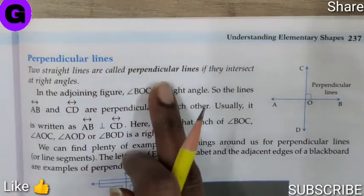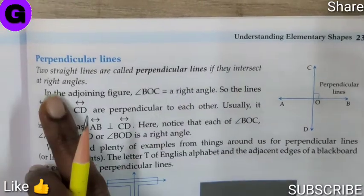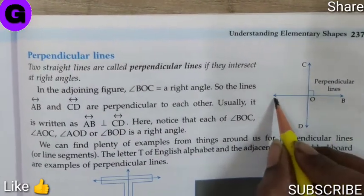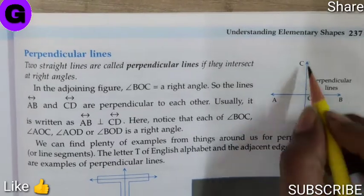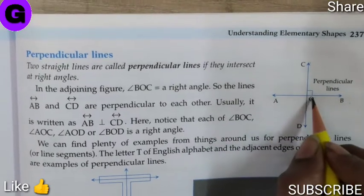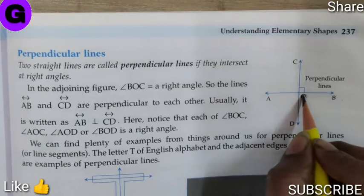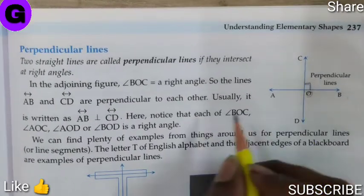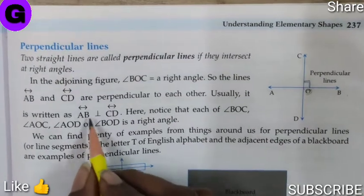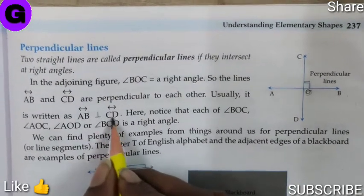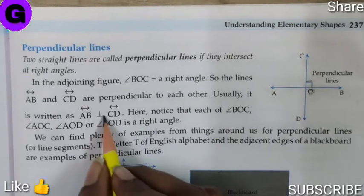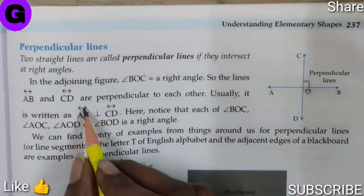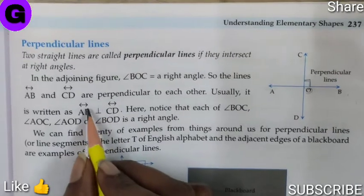Two straight lines are called perpendicular lines if they intersect at right angle. As you can see the figure here, line AB and CD they are crossing and meeting at a center point called O and they cut each other at 90 degrees. So line AB is perpendicular to line CD. This is the symbol of perpendicular and we write line as an arrow pointing both ways. That means it is infinite.